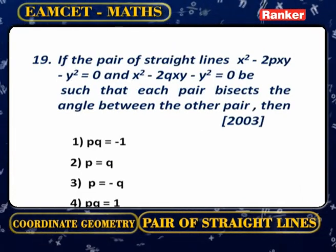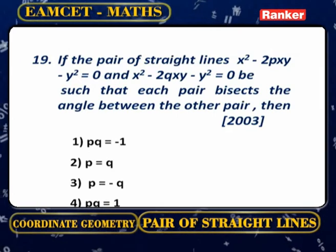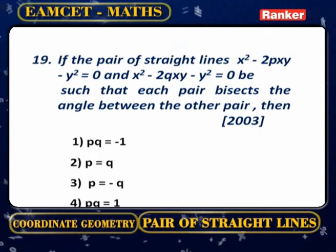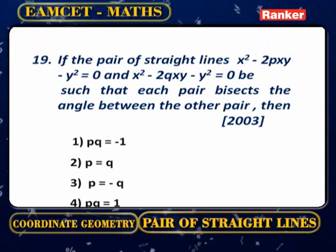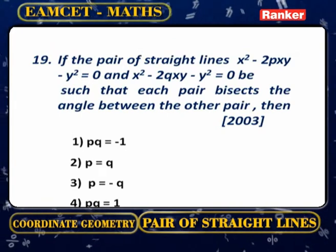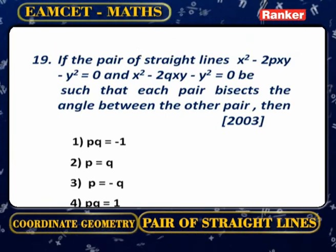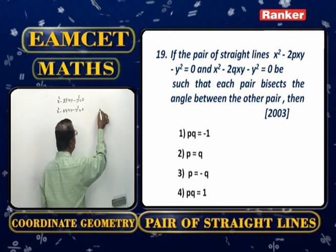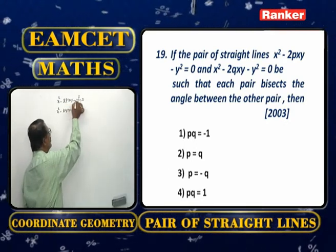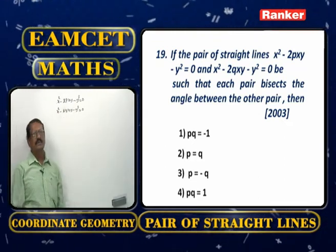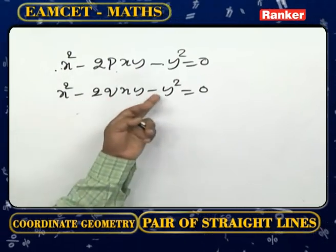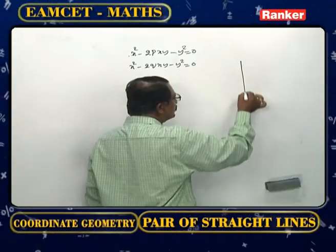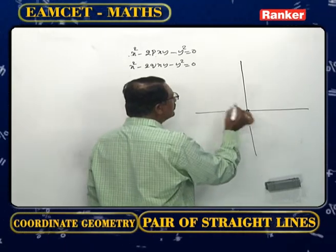If the pair of lines x² − 2pxy − y² = 0 and x² − 2qxy − y² = 0 are such that each pair bisects the angle between the other pair, find the relation between p and q. Both pairs are perpendicular since the sum of coefficients of x² and y² equals 0 in each case.